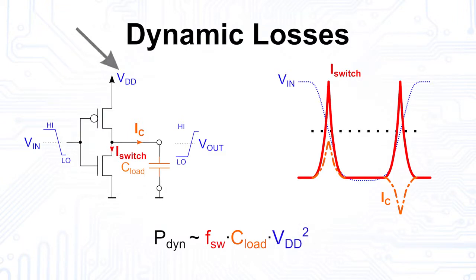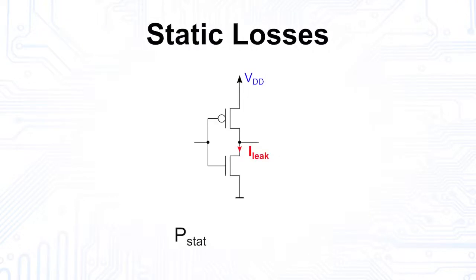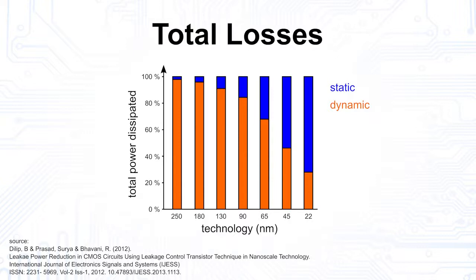The dynamic losses also depend quadratically on the supply voltage, which is a very good reason to keep it as low as possible. A second factor is the static loss of the CMOS circuits. These are linearly dependent on the leakage current of the MOSFETs, which increases with increasing channel width and the supply voltage. Today, static losses pose a huge problem, accounting for over half of the total losses since the invention of the 50nm technology.